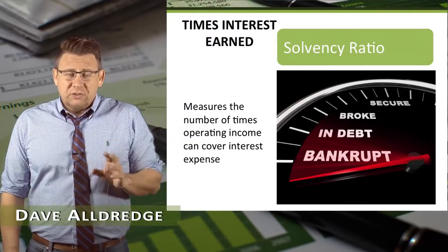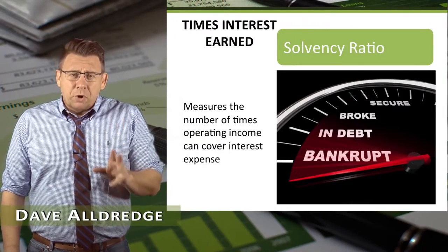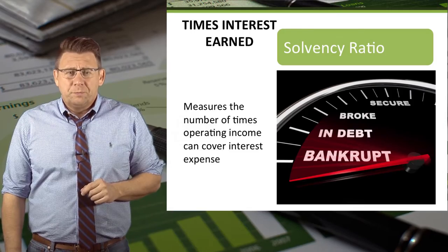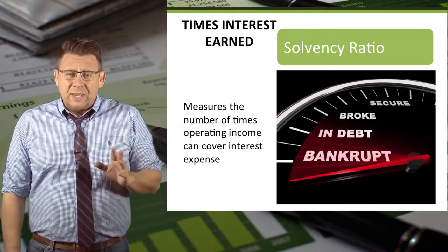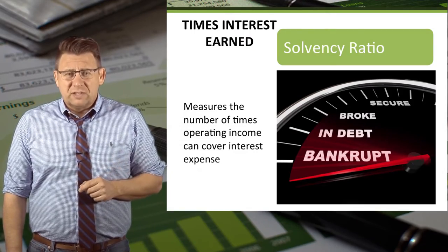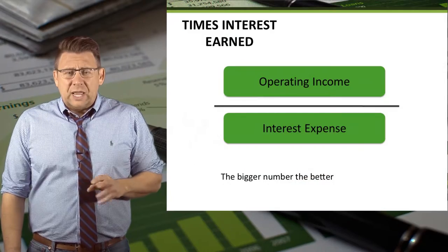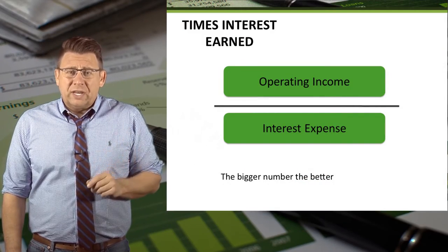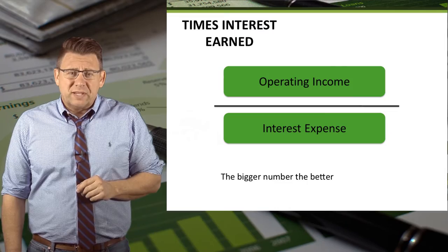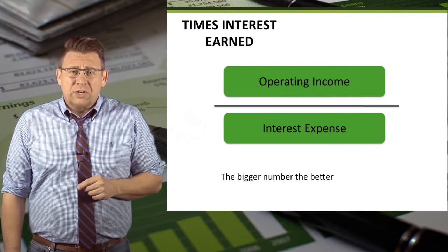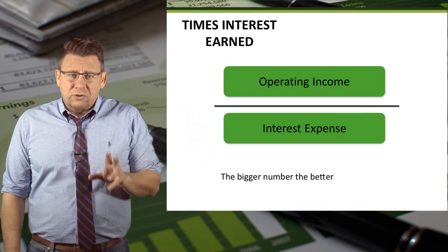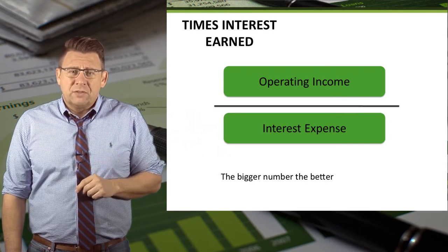Times interest earned is really the number of times interest expense can be covered by operating income. It is a measure of solvency, calculated as operating income divided by interest expense. It tells us how many more times a company's operating income is greater than the interest claims on those earnings.